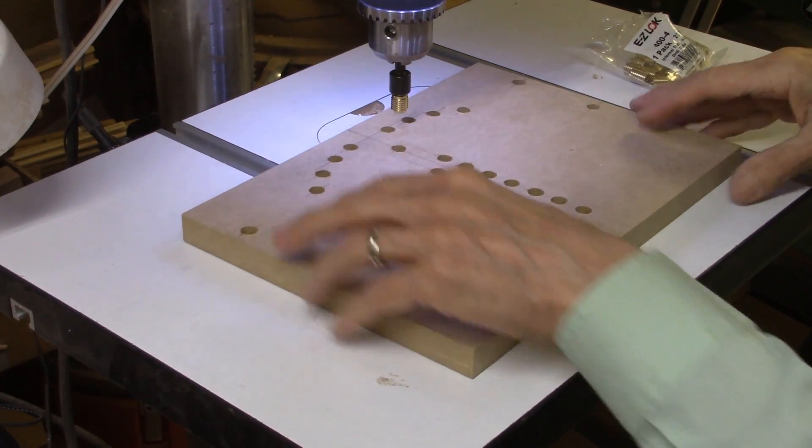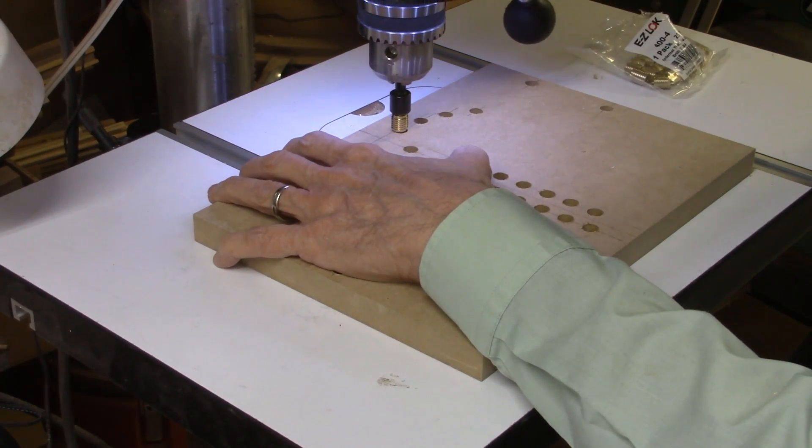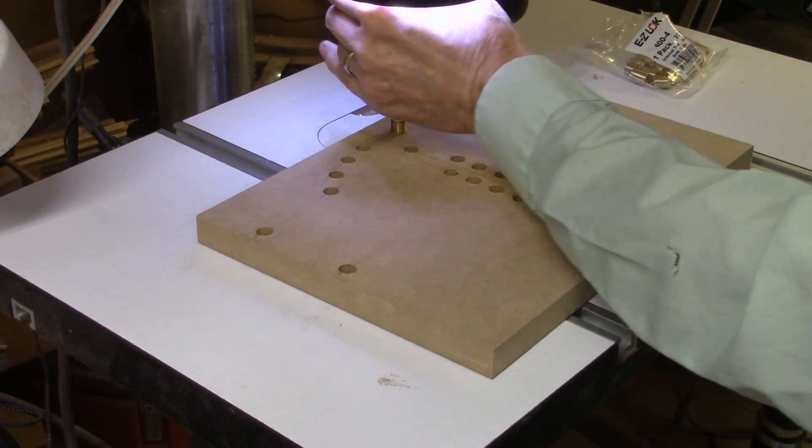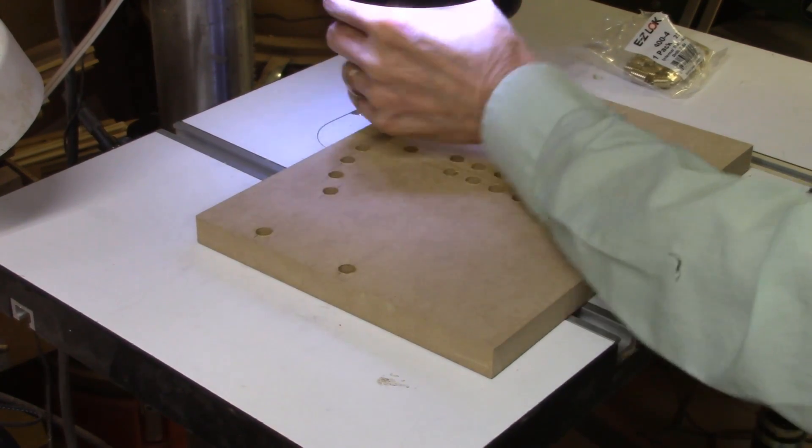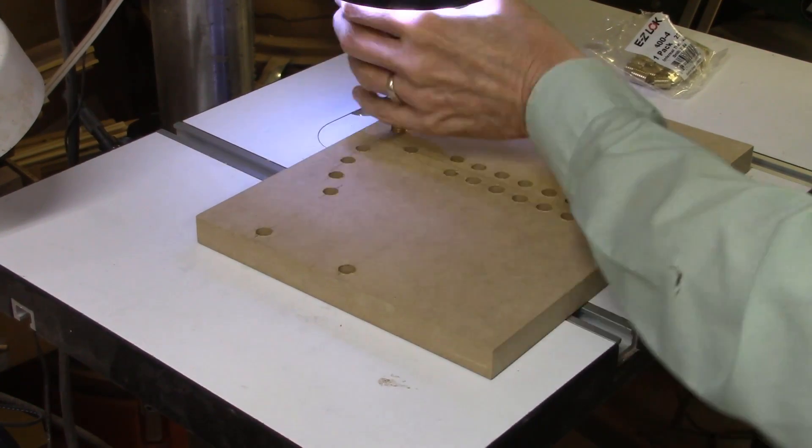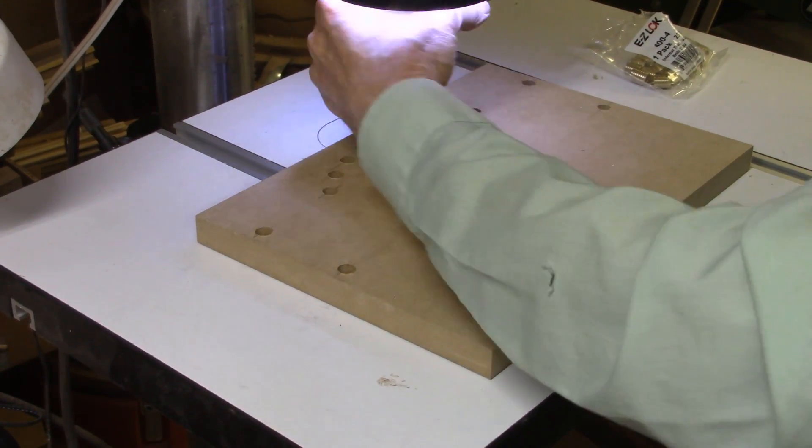The way I like to do this is to bring it down and start turning the bit by hand. I don't want to use the drill press itself because it will go too fast and over tighten it. But just make sure these inserts go in nice and square, which is important.